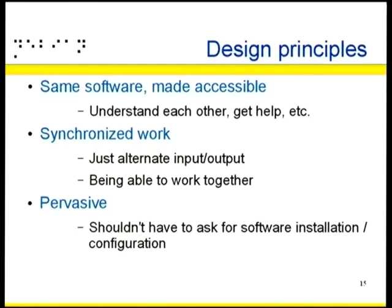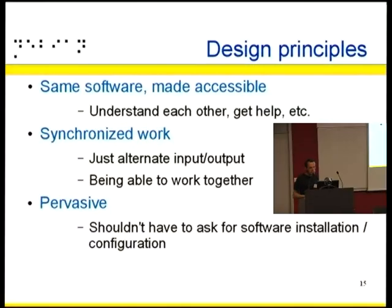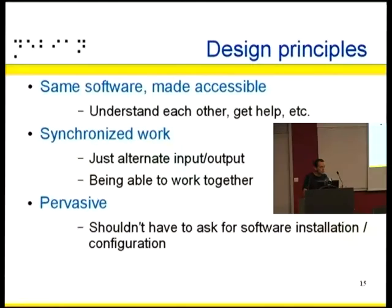So there are three main principles: use the same software made accessible. You also want synchronization between disabled and non-disabled people — alternate input and output of the same content so two people working together can understand each other. And you want this to be pervasive — when you go to a library, you don't want to ask the system administrator to install and configure software. Ideally, it should be available on all platforms all the time, just ready to be enabled.